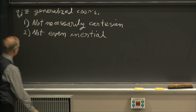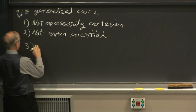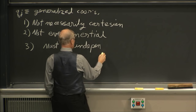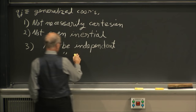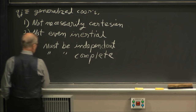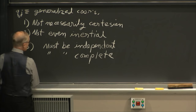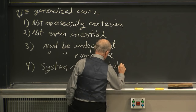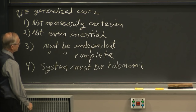The coordinates do have to satisfy certain requirements. They must be independent, they must be complete, and the system must be holonomic — I'll get to that in a minute. So you need to understand what it means to be independent, complete, and holonomic.